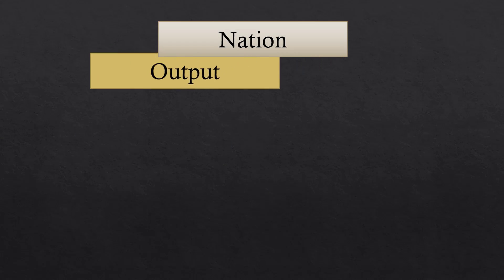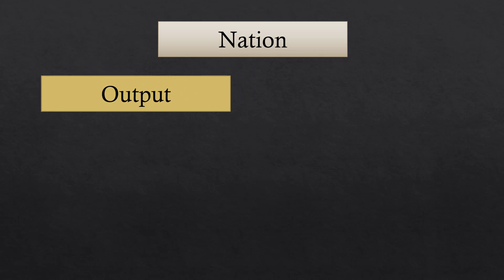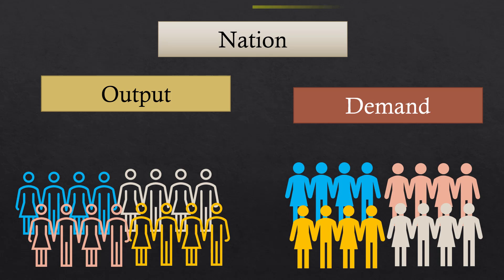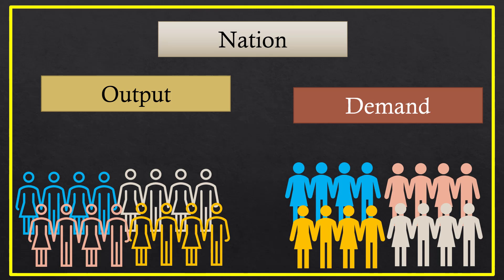On the one hand, nation produces the output, and on the other hand, it generates demand for that output. Of course, both are performed by different sections of the people living in the same nation. So, it becomes necessary for us to probe into the link between national income and the output people plan to buy.